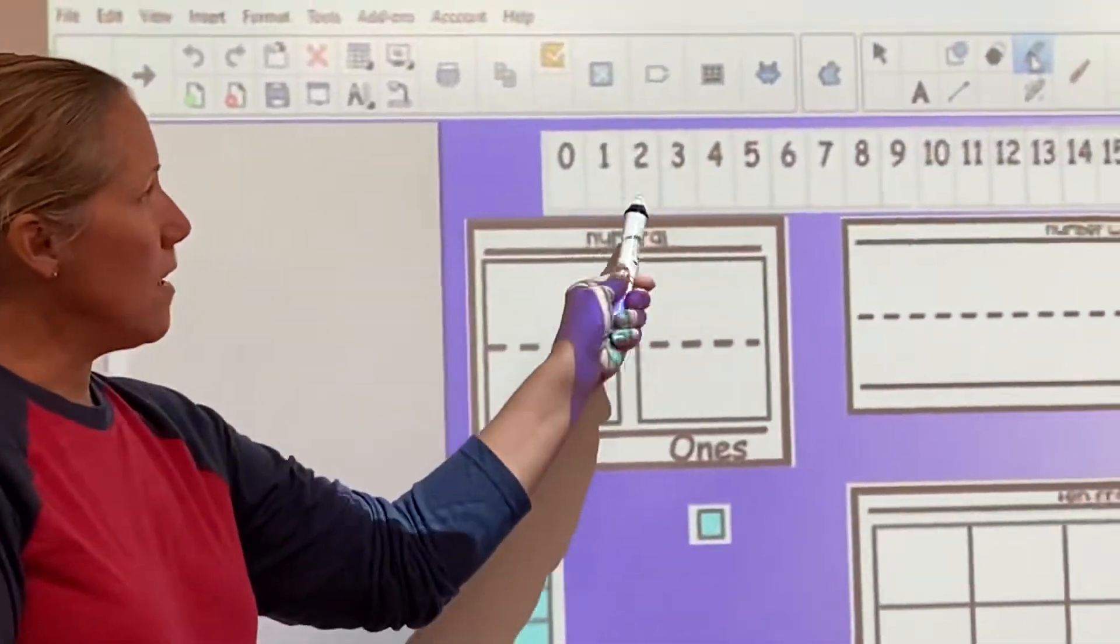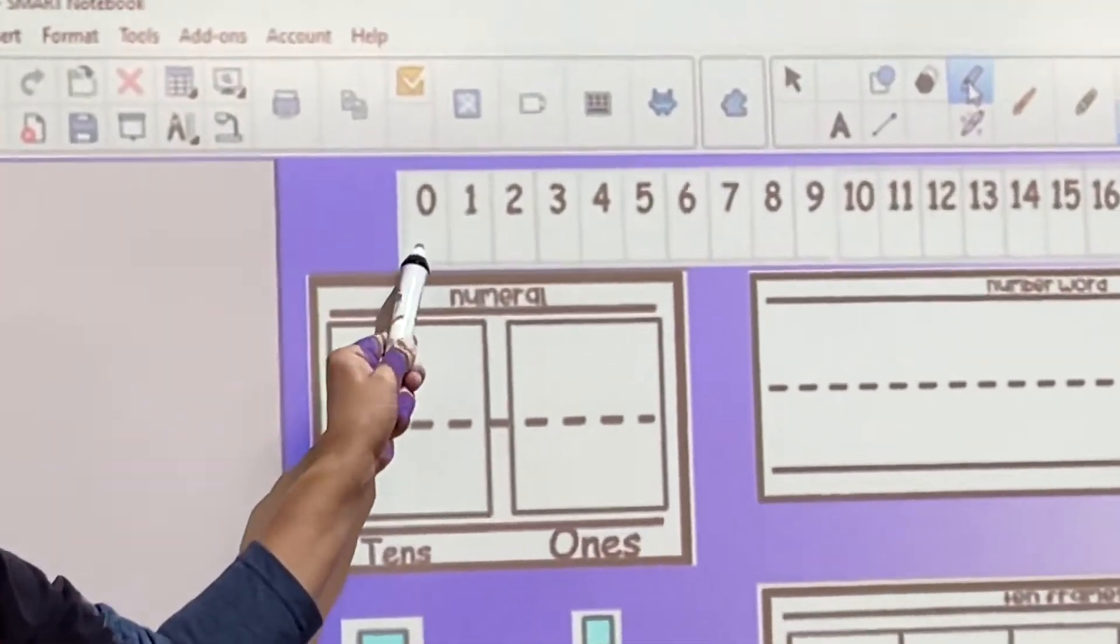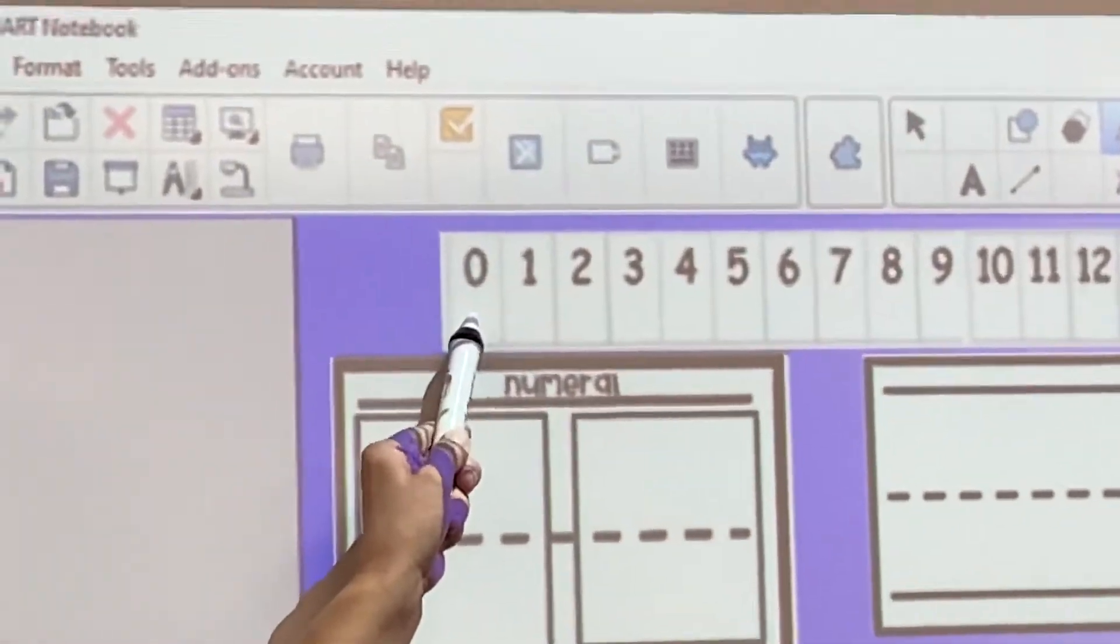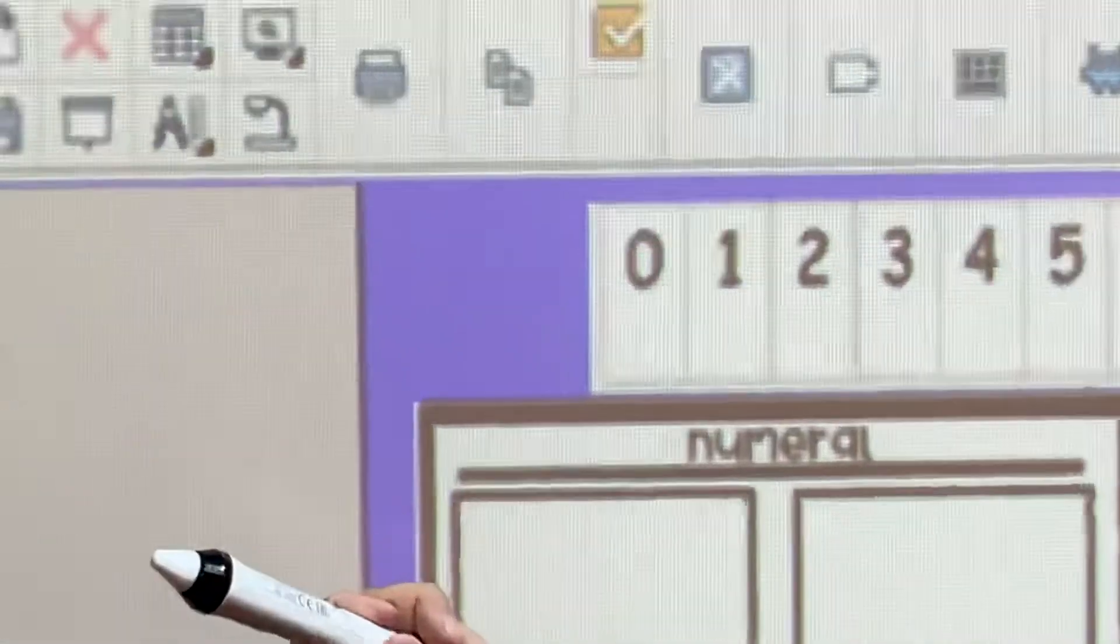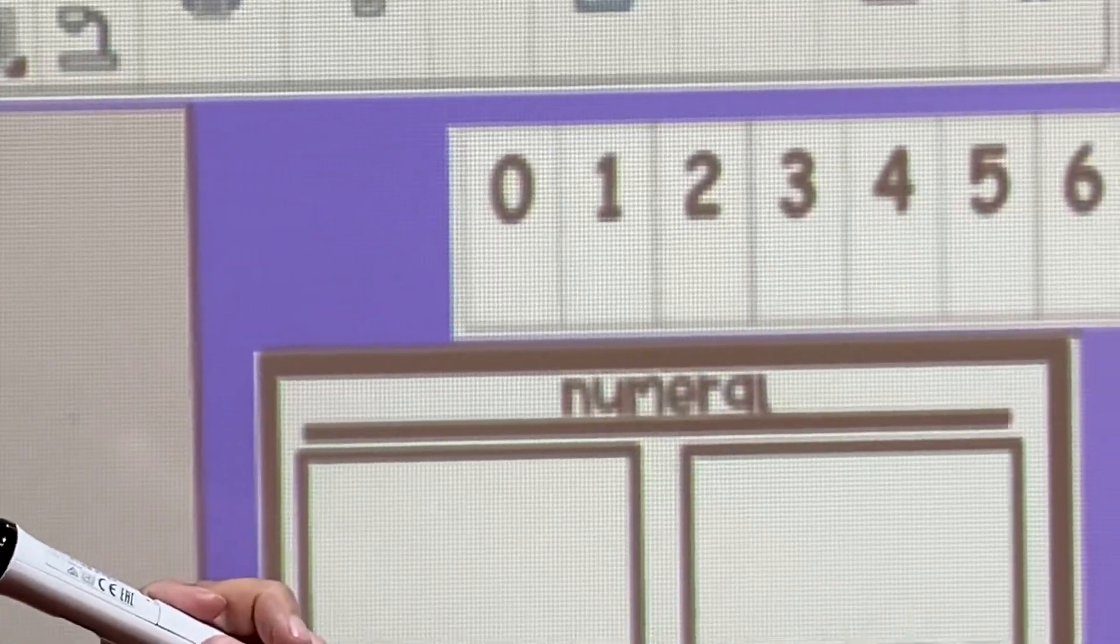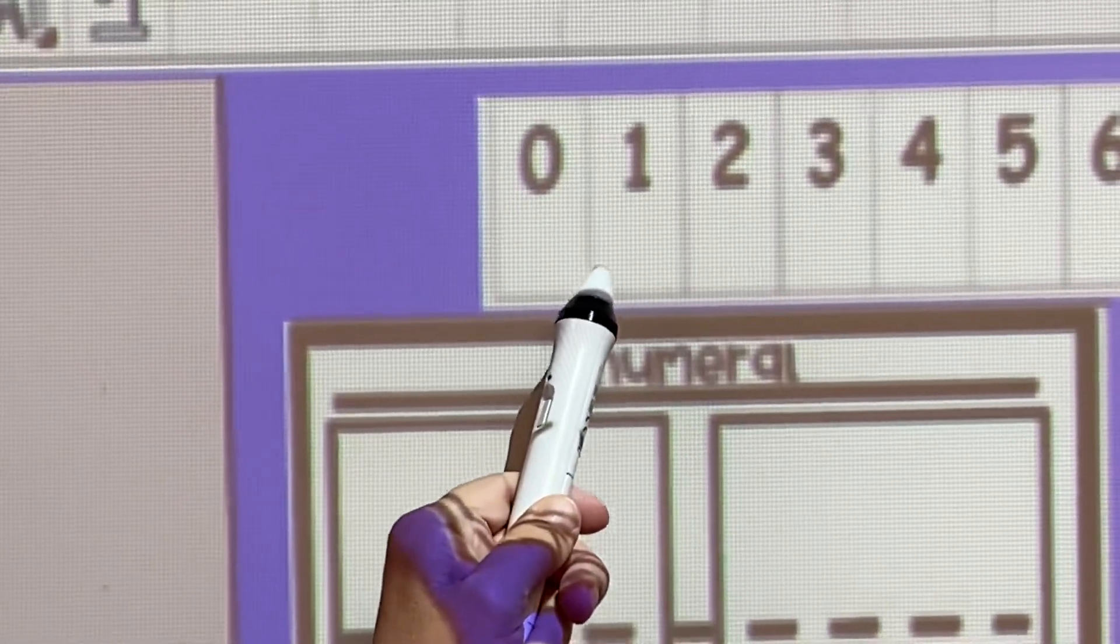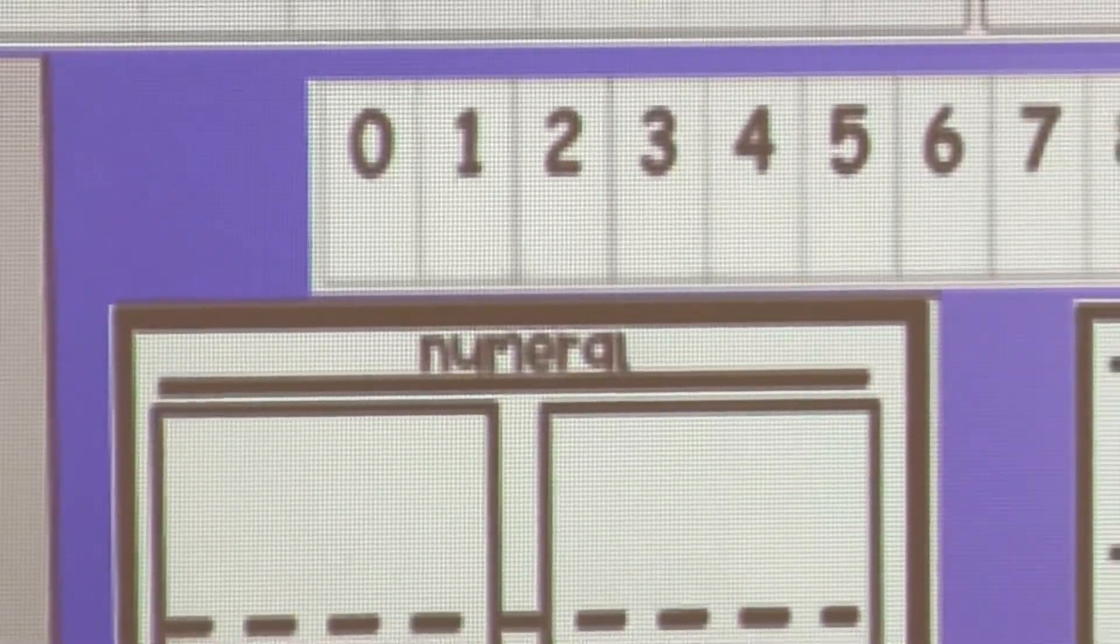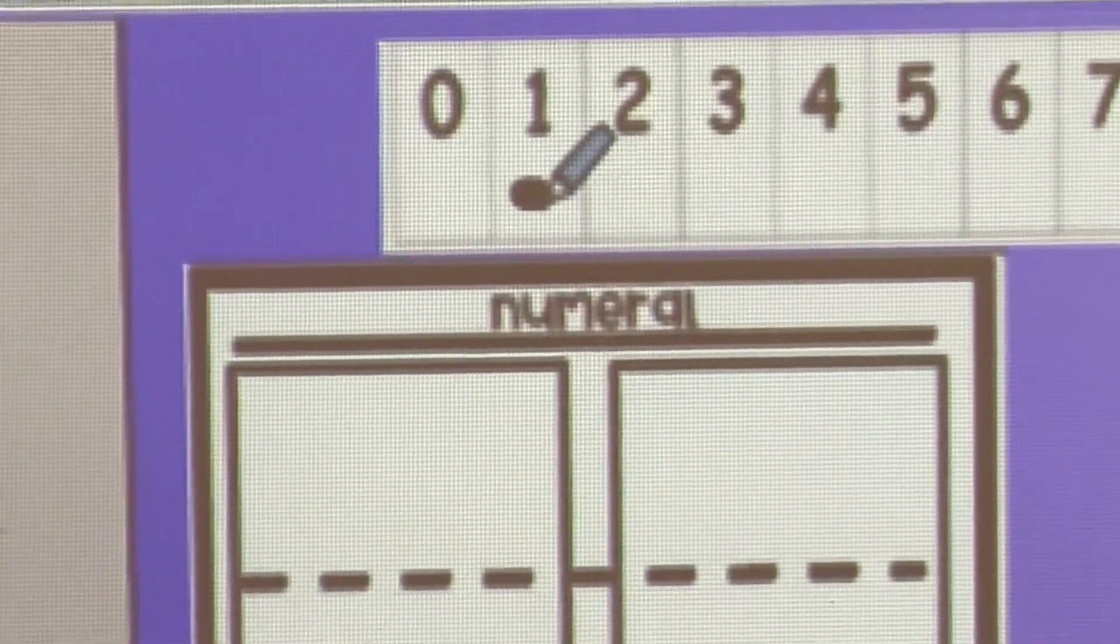On our number path, and you have a number path like this at home, there's the number zero. What number comes after zero? Anyone? That's right. The number one comes after zero. That is our number this week. So I'm going to put a little circle right there so we know that is our number.